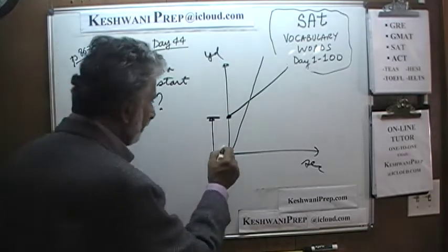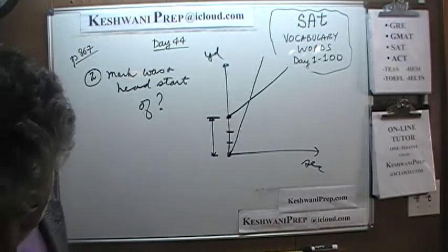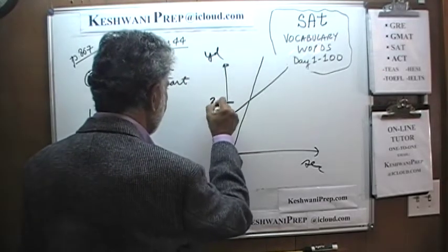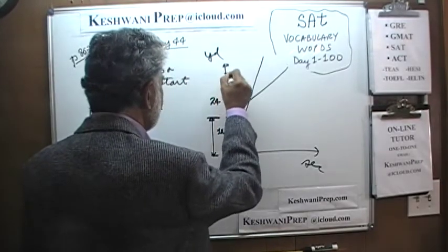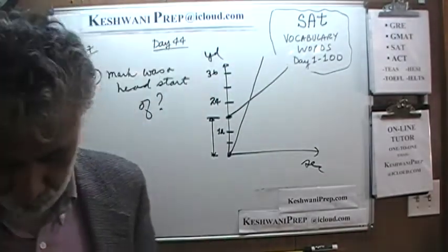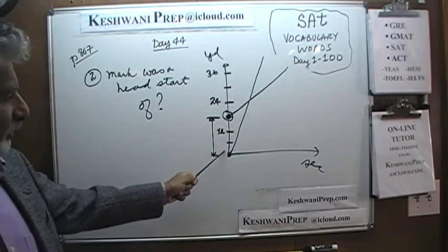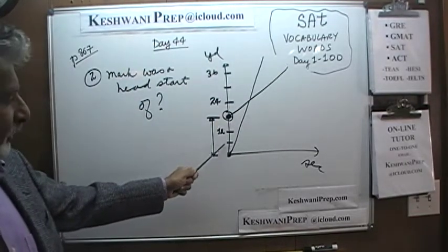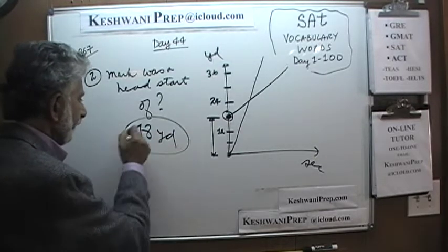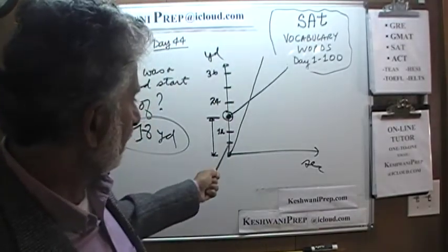We have to pay attention: the graph goes by 6. So the marks are 6, 12, 24, 30, 36 — this is how the graph is marked. Mark is at the third mark. Since each mark is a unit of 6 yards: 6 yards, 12 yards, 18 yards. The answer is 18 yards. He was given a head start of 18 yards because he is at the third marker — 6, 12, and 18.